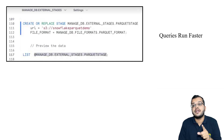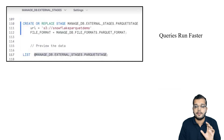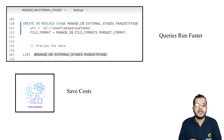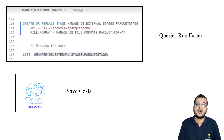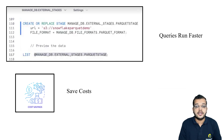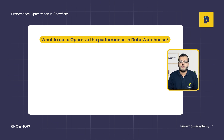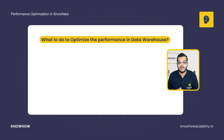An interesting fact is that whenever we are trying to improve the performance of a particular query, the cost also gets saved in parallel. In Snowflake, cost is determined depending upon the size and the clusters we are using. So that cost also gets saved when we improve the performance of a particular query. We need to consider what kind of optimization steps are needed to improve the performance of our data warehouse.